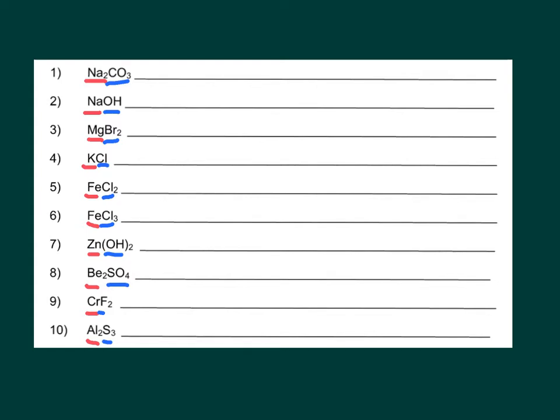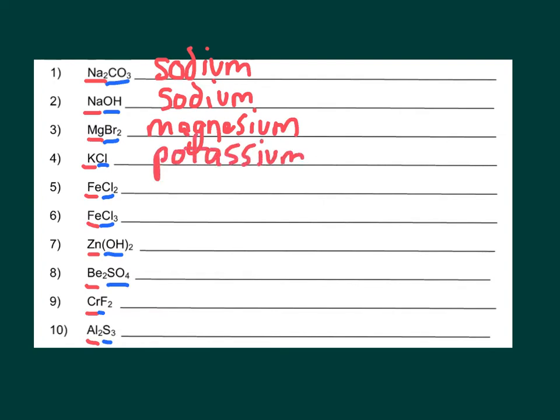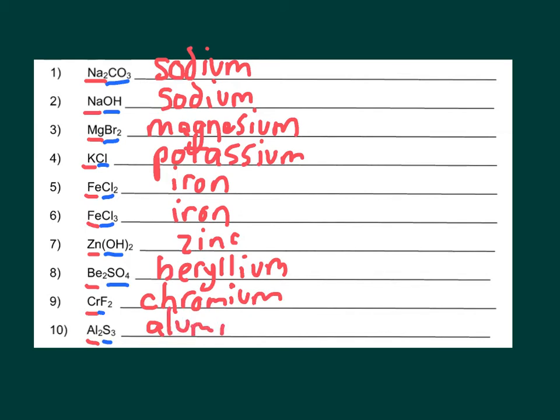What I'm going to do first is write down all of the cations because that is just easy, it's simple. I can just look up the name. I've got sodium. Sodium again. Magnesium. Potassium. Iron. Iron. Zinc. Beryllium, which I'm probably going to misspell, or not. Chromium. And aluminum, or aluminium if you are in Britain.